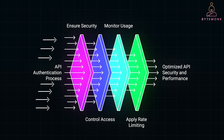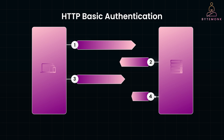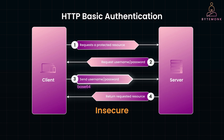Let's look at the most common API authentication methods. HTTP basic authentication is one of the simplest forms, where the client sends a username and password in the HTTP header encoded in base64. While easy to implement, it's not very secure since the credentials are sent with every request and are not hashed or encrypted by default. So they can be intercepted, which makes this authentication mechanism insecure unless it is used in conjunction with HTTPS.